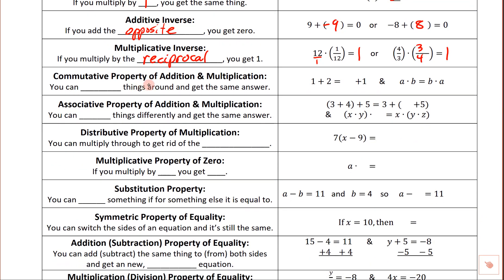The commutative property of addition and multiplication — when you commute, you move from one place to another. So the commutative property says you can move things around and get the same answer. One plus two is the same as two plus one — the order doesn't make any difference. And a times b is the same as b times a. Commutative means you can move things around.